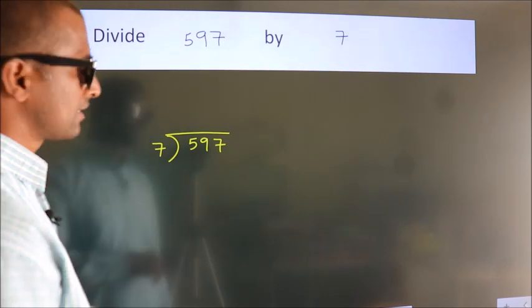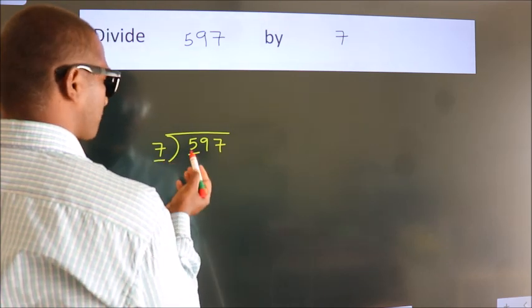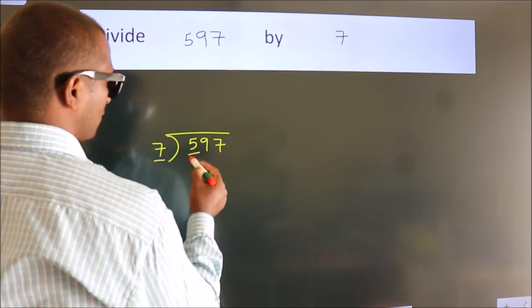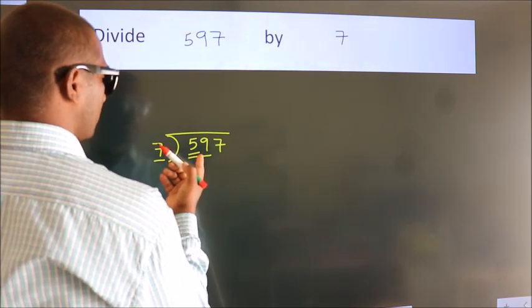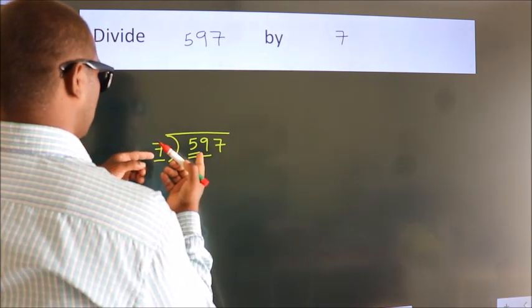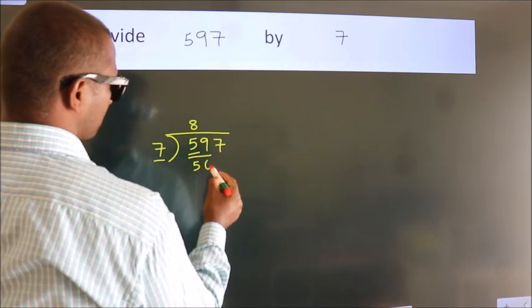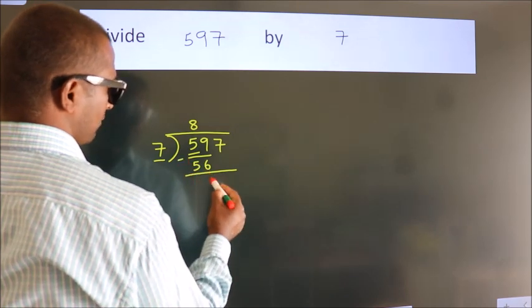Next. Here we have 5, here 7. 5 is smaller than 7, so we should take two numbers: 59. A number close to 59 in the 7 table is 7×8=56. Now we should subtract. We get 3.